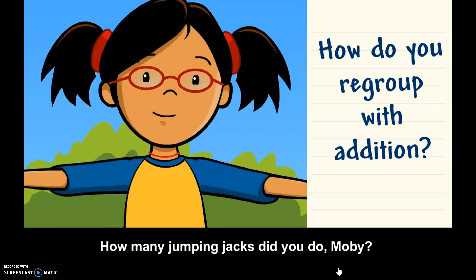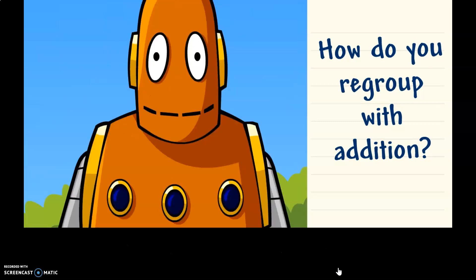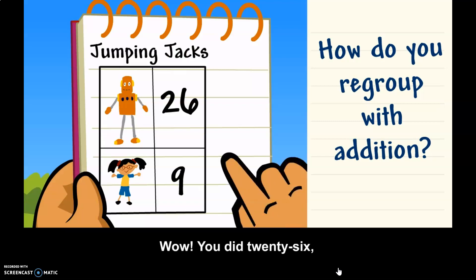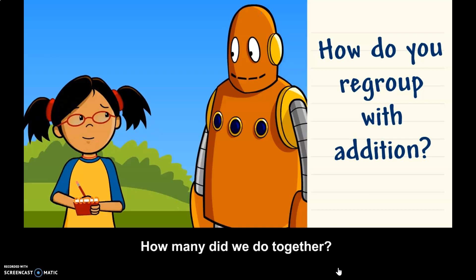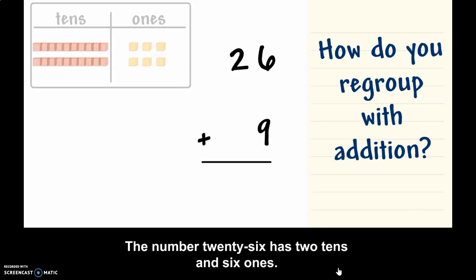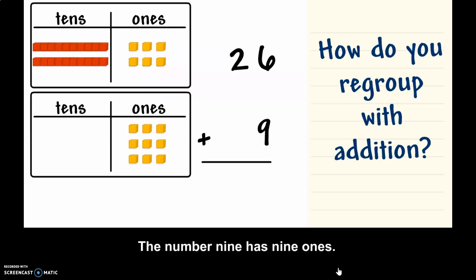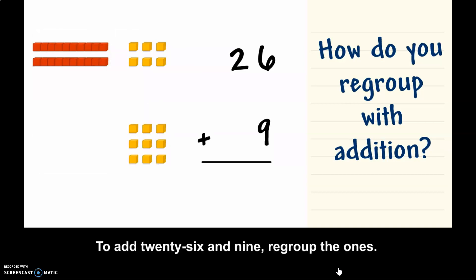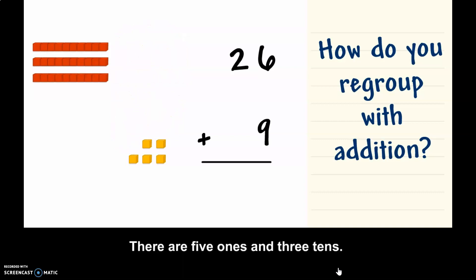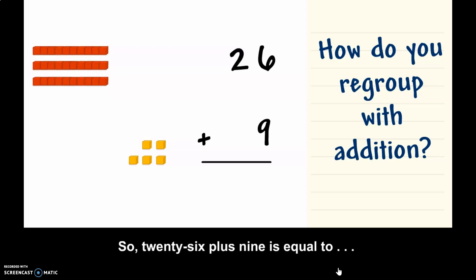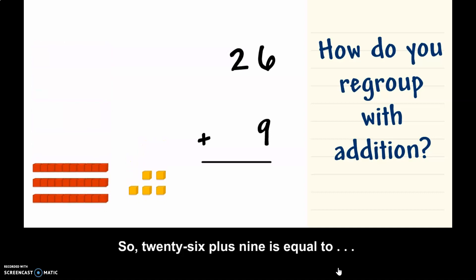How many jumping jacks did you do, Moby? Wow, you did 26, and I did 9. How many did we do together? The number 26 has two tens and six ones. The number 9 has nine ones. To add 26 and 9, regroup the ones. Trade 10 ones for one ten rod. There are five ones and three tens. So, 26 plus 9 is equal to 35.